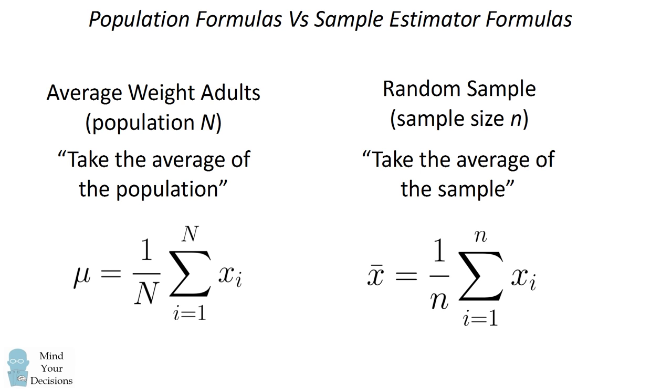Our estimator, our sample formula, is x bar equals 1 over n times the sum of the individuals. So you can see these two formulas are actually pretty similar. The population formula, where we know each observation, and the sample formulas are pretty much the same, except we're substituting the different sizes in our formulas.